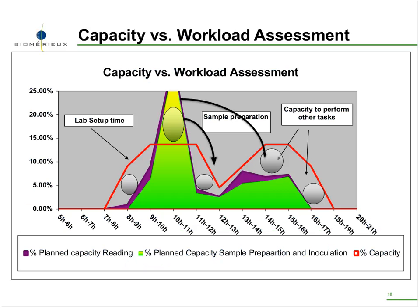A capacity versus workload assessment was also done using Six Sigma tools. Kate supplied us with about a year's worth of data — timestamps, types of samples received, where they were received from, how they were received, and what the turnaround time was. We took all this data, analyzed it, and were able to identify the existing gaps. The gray circles you see are the actual gaps that were identified, which helped us come up with a tailored solution so that the lab can improve from good to great.